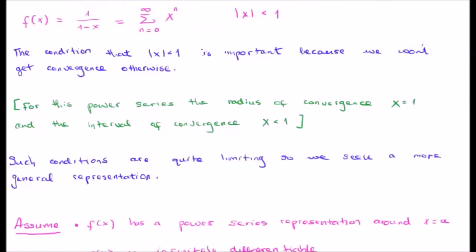So looking at the function one over one minus x, the condition that the magnitude of x must be less than one is important because otherwise we won't get convergence and in actual fact it will not have a power series representation. So it only really works for small values of x. Unfortunately, such conditions are quite limiting. So we seek a more general expression.